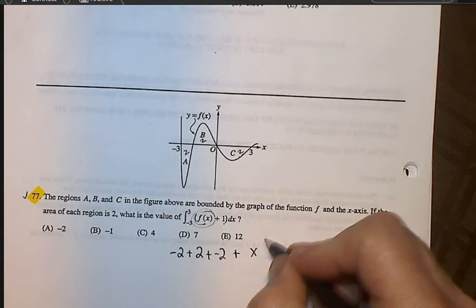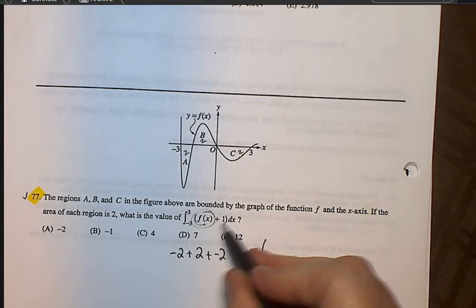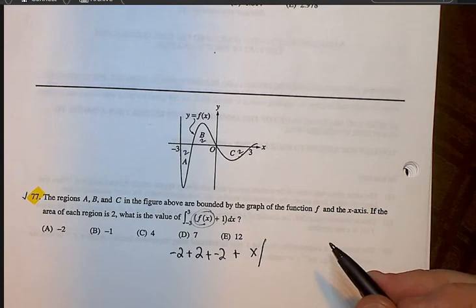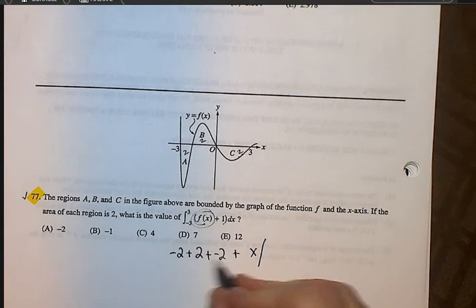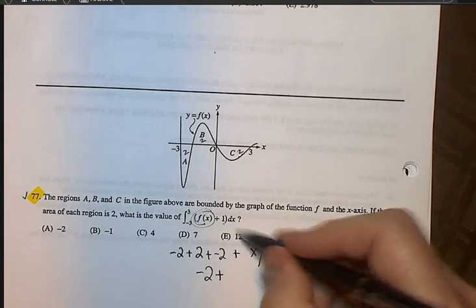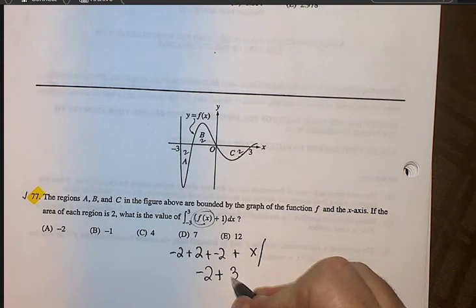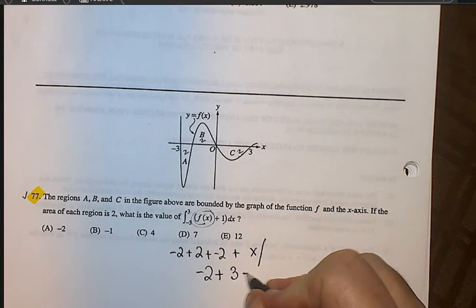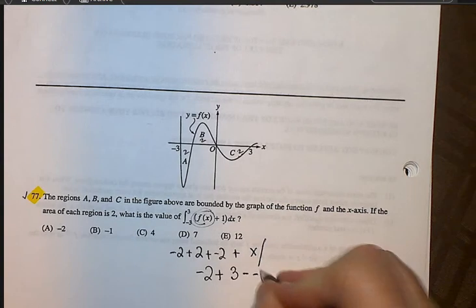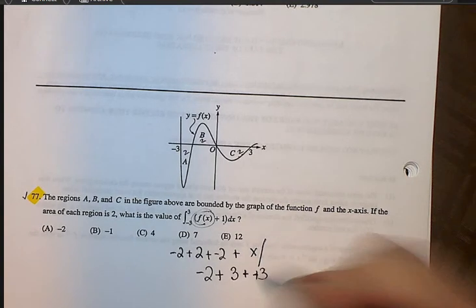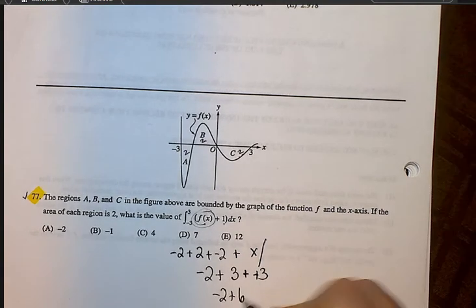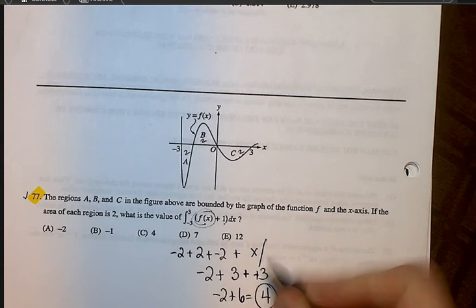But that x has to also be evaluated from negative 3 to positive 3. Alright, so this is going to be, when all is said and done, a negative 2 plus, and now I'm going to plug in, I plug in a positive 3 first, x to the positive 3, and then minus what I get when I plug in the negative 3, so these will cancel. I'm left with a negative 2 plus 6, which is 4, choice C.